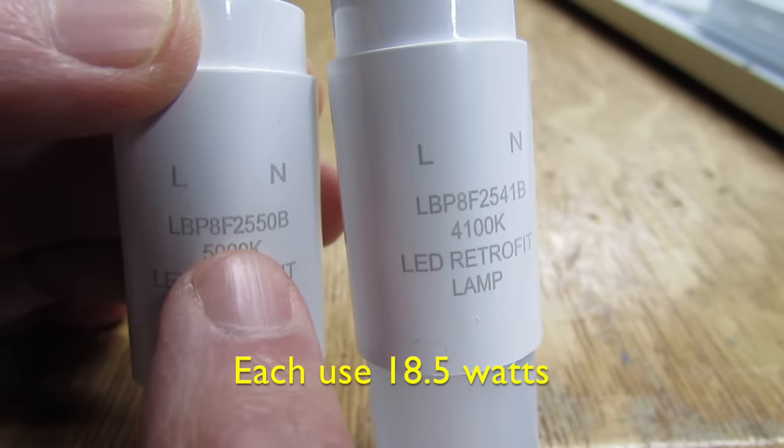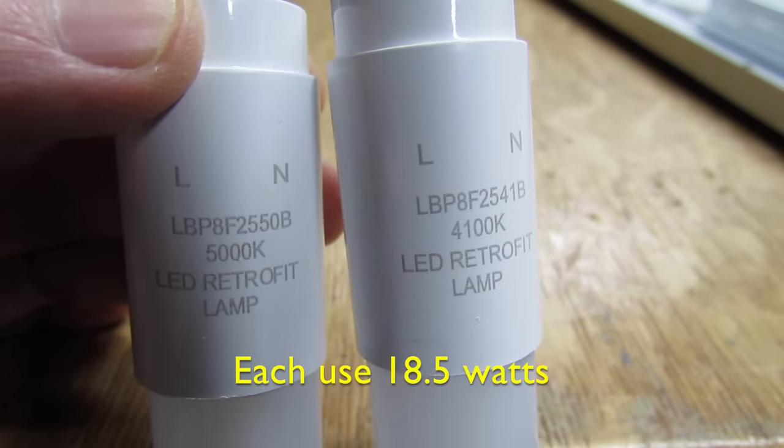They sent me two types of bulbs: one's 5000K, one's 4100K. When we're finished, we'll try them both out to see which is better for a workshop. Before I forget, everything we discussed today will be in the description below.